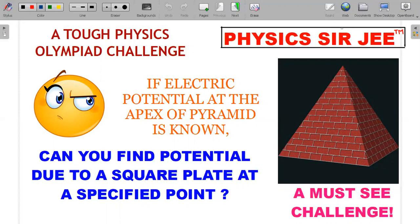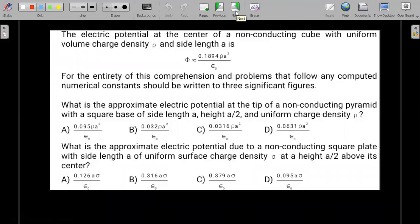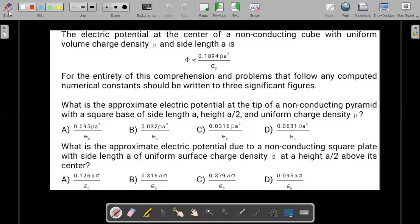This is a question on electrostatics and electrostatic potential to be more precise. Let me share the formal wording of the modified version of the question. The electric potential at the center of a non-conducting cube with uniform volume charge density ρ and side length a is provided in this expression. For the entirety of this comprehension and problems that follow, any computed numerical constants should be written to three significant figures.